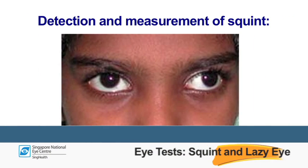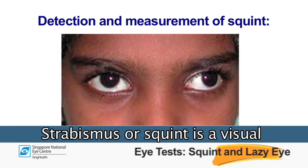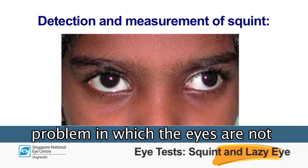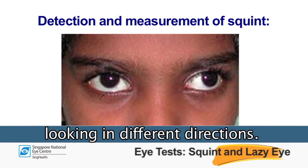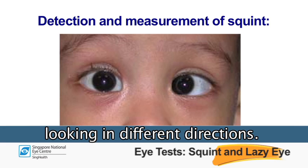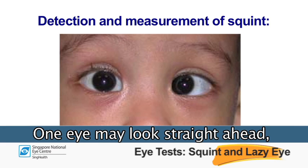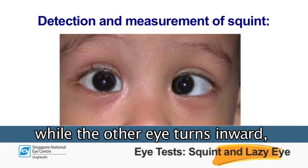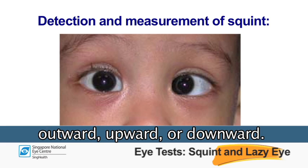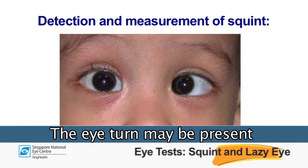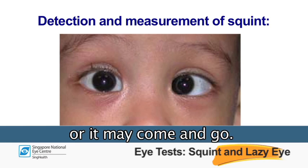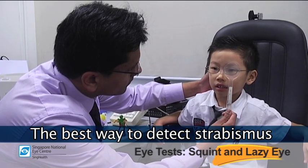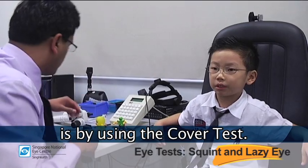Detection and measurement of strabismus: strabismus is a visual problem in which the eyes are not aligned properly and appear to be looking in different directions. One eye may look straight ahead while the other eye turns inward, outward, upward, or downward. The eye turn may be present at all times or it may come and go. The best way to detect strabismus is by using the cover test.